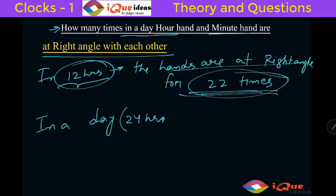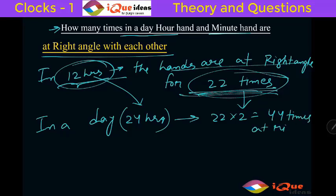So in a day which is of 24 hours it will happen for how many times? Let's see, 12 hours 22 times, so 12 double 24, so 22 double that is 22 into 2 which is 44 times at right angle in a day.